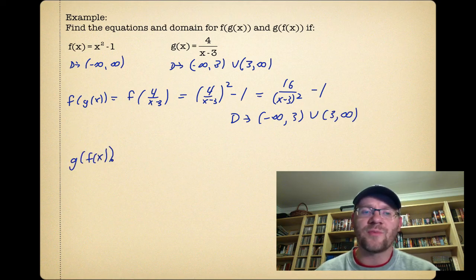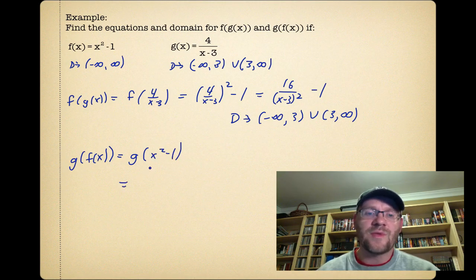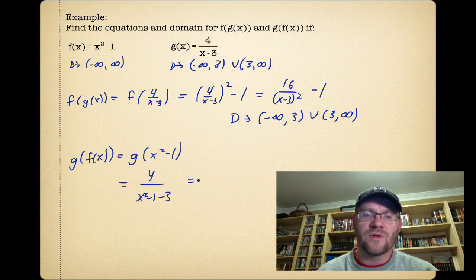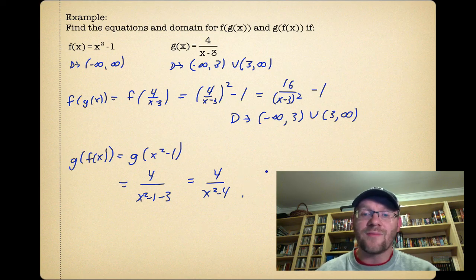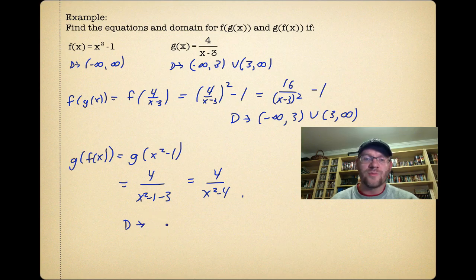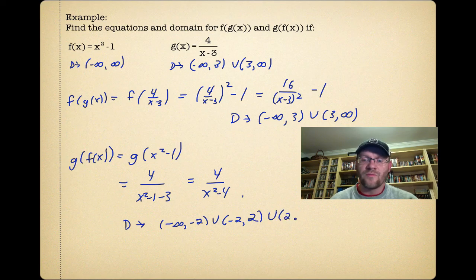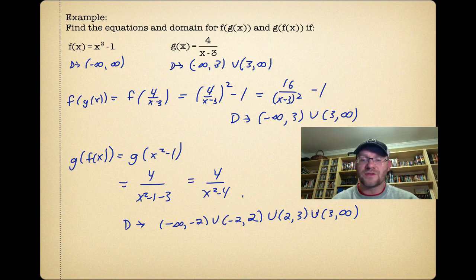For g of f of x, we take g(x) and plug in x² - 1, giving us 4/(x² - 1 - 3), which is 4/(x² - 4). This new function has two vertical asymptotes, one at x = 2 and one at x = -2. So the function can't exist at x = 2, x = -2, or x = 3 (from the original g(x) restriction). The domain is therefore: negative infinity to -2, then -2 to 2, then 2 to 3, then 3 to infinity — excluding -2, 2, and 3.